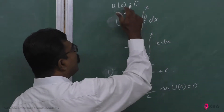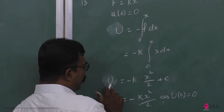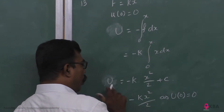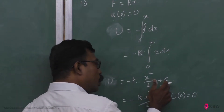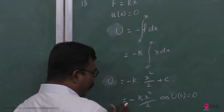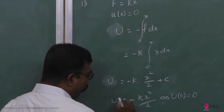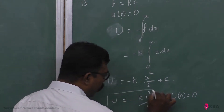What do I know? U(0) is equal to 0. So, substituting the initial conditions: U(0) = 0. That means C should be 0. So the equation is U equals minus kx squared by 2.